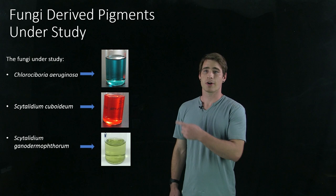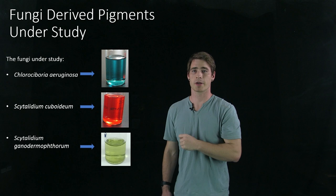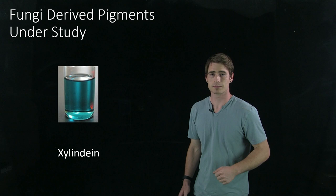We have several different pigments that we study. Here are the fungi that produce these pigments and their respective pigments. There's this blue-green one called xylundine that I already mentioned. There's also a red pigment and a yellowish-greenish pigment, although most of our work has focused on the blue-green pigment xylundine.